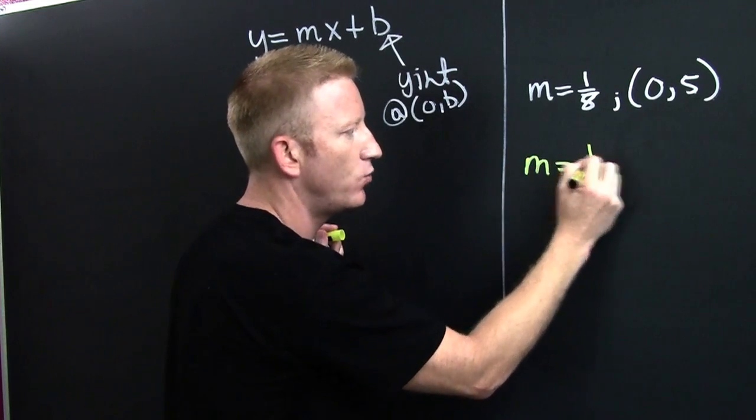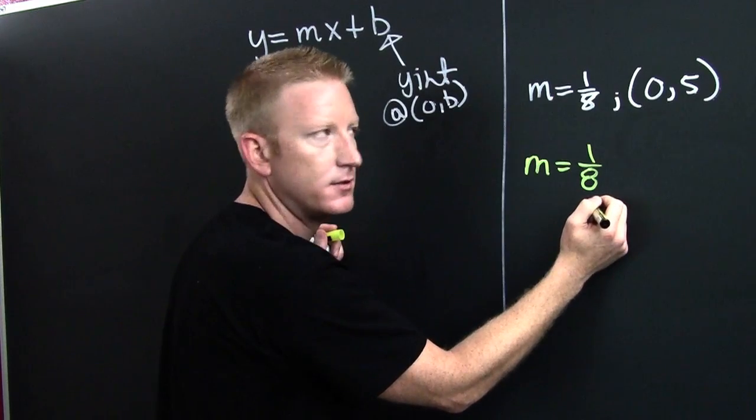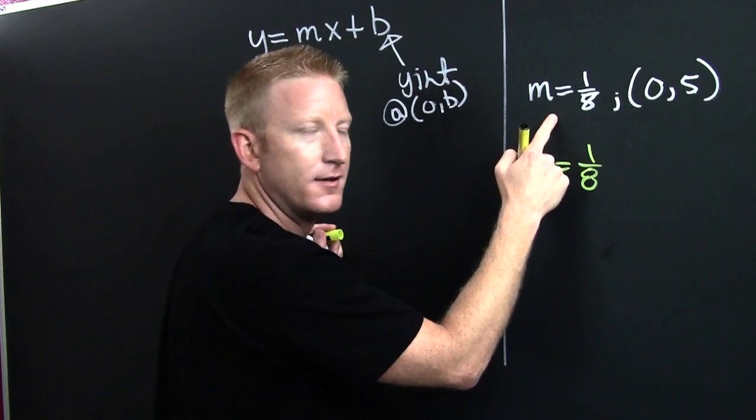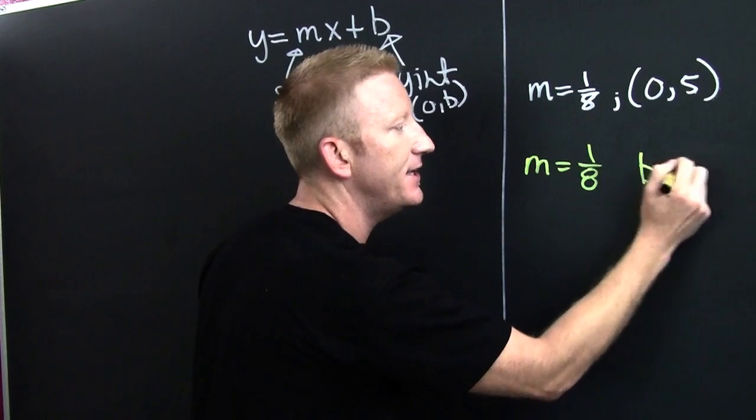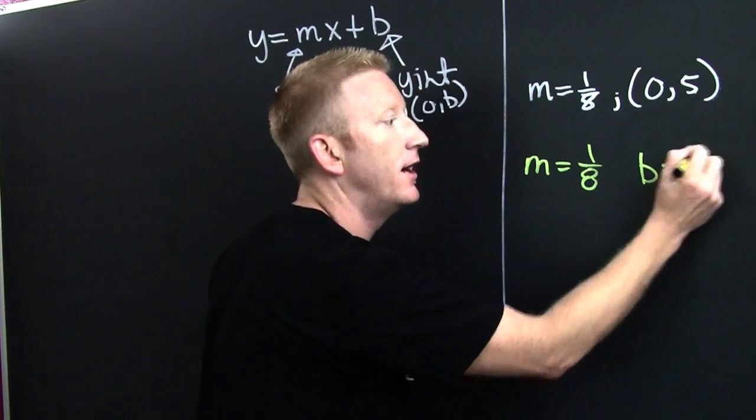M is 1 eighth. How did you know that? Next. B is... Wait. What's b? 5. Uh huh.